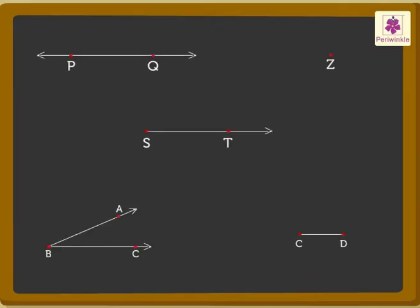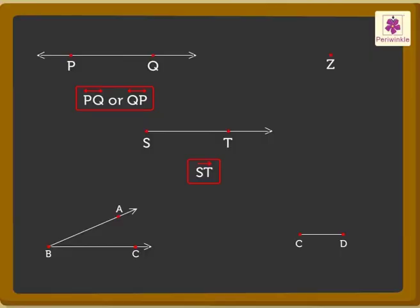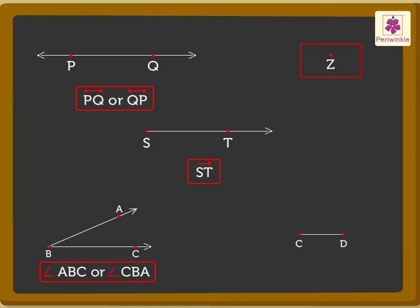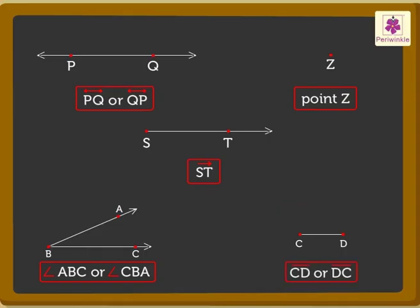Now I will show you some figures and you name them. What is this? Yes, it is line PQ or line QP. What is this? Correct — it is angle ABC or angle CBA. Next is the simplest of all. Yes, it is point Z. And the last one? Yes, it is line segment CD or line segment DC.